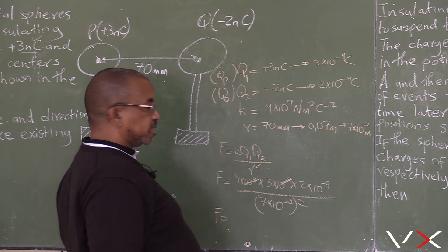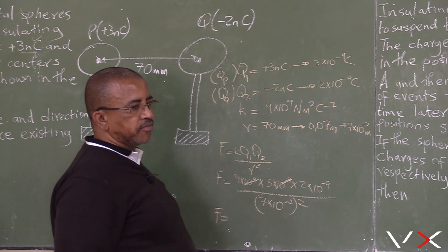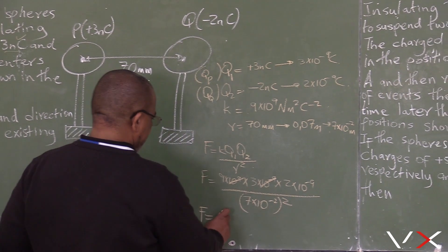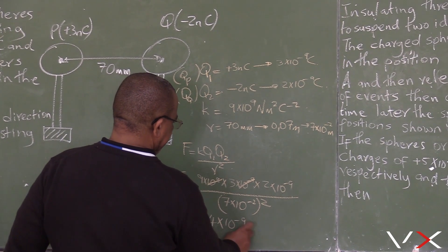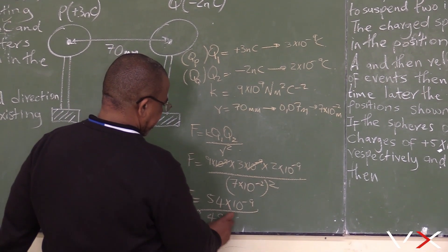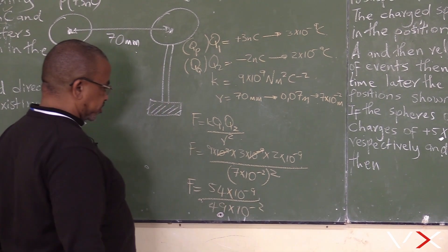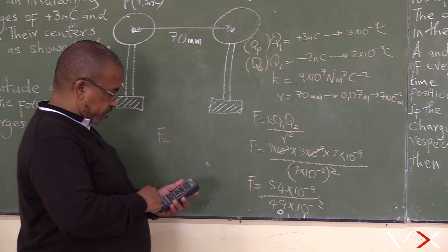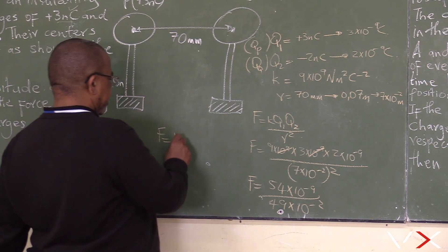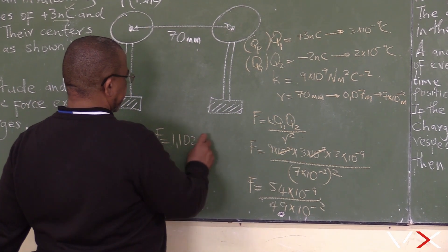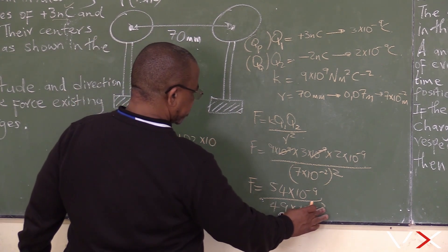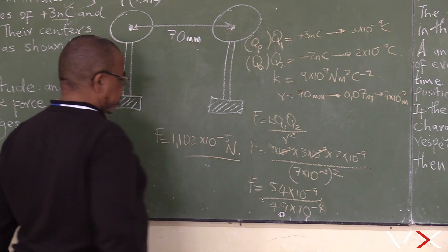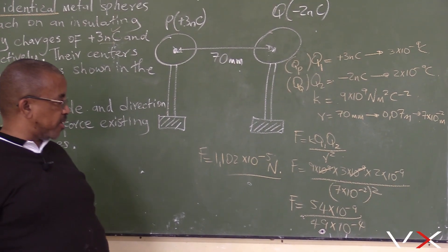We need the magnitude of the force, so we ignore the signs and calculate. We have 3 times 2 equals 6, and 6 times 9 equals 54. So we get 54 times 10 to the power minus 9, divided by 49 times 10 to the power minus 4. That gives us 1.102 times 10 to the power minus 5.